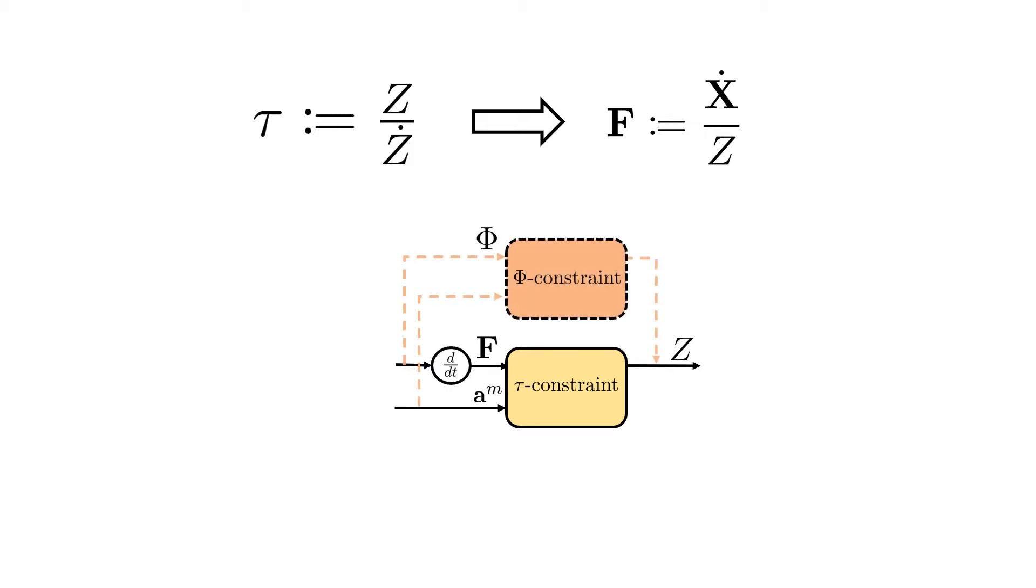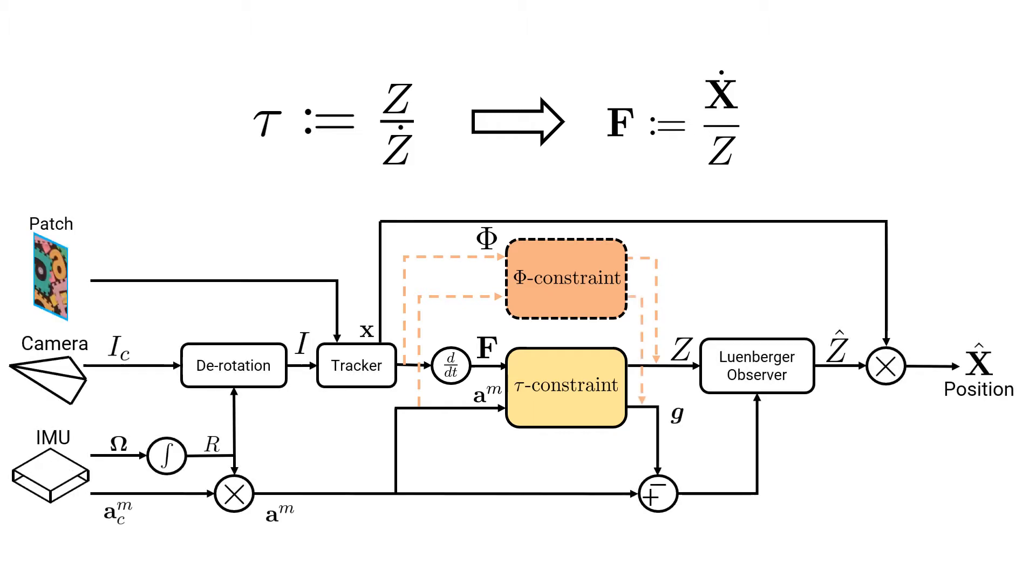Further, we derive a closely related constraint that we call the phi constraint. With minor augmentations, these constraints allow a moving monocular camera to estimate the distance to a patch of unknown size by accelerating in any direction.